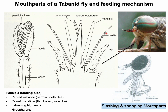When feeding ceases, the fascicle is withdrawn and the labella come together, trapping any pathogen within the labella. The pathogen can survive for a while in the labella, and if the fly feeds on another animal in the meantime, it can transmit the infection — this is a mechanical type of disease transmission. Research shows that Trypanosoma evansi can survive in the labella for up to one hour. In biological transmission, the pathogen passes with the saliva during feeding.